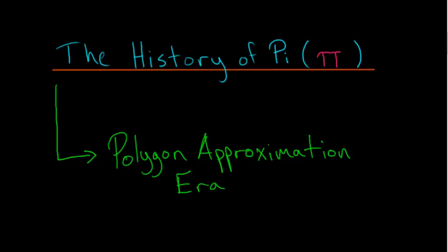This video on the history of pi focuses on the Polygon Approximation Era. This era was started when Archimedes found that pi is less than 3 and 1/7 and greater than 3 and 10/71sts.